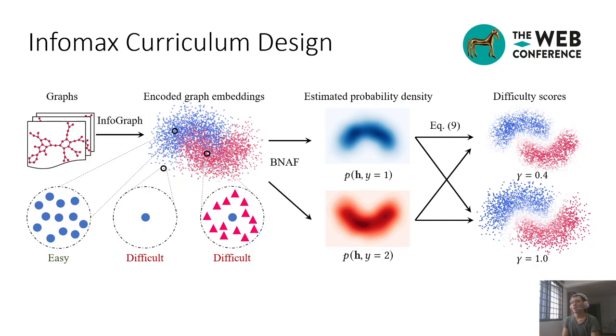Recent research shows that the graph embeddings provided by InfoGraph are powerful on multiple downstream tasks. However, we extend its application to curriculum learning. InfoGraph follows the InfoMax optimization principle, so we call our method InfoMax Curriculum Design. By analyzing the neighbors for each graph in the embedding space, we derive the connections between the difficulty scores and the probability densities. The details can be found in the paper. The remaining task is to estimate the probability densities given the embedding set.